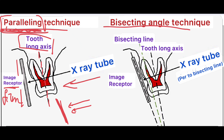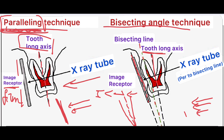In the bisecting angle technique, the image receptor or film is placed as close as possible to the tooth surface. The x-ray tube producing x-rays should be perpendicular to the bisecting line of the long axis of the tooth and the image receptor. As you can see, this green line is the line bisecting the long axis of the tooth and the image receptor. So the x-rays should be perpendicular to this imaginary bisecting line.